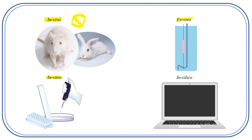In ex vivo studies, the experiments are also performed outside the body of the animal. But here the condition is different from in vitro — the tissue must remain alive. We provide the tissue with simulated conditions required in the body, like nutrients, pH, temperature, aeration, and oxygen supply — all requirements needed to keep the tissue live within the specific tube where it is kept.